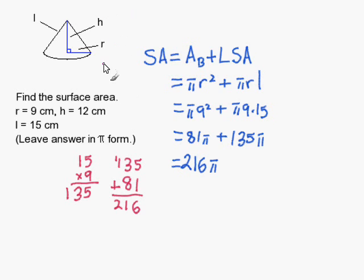I'm going to leave it in pi form because this question is telling me to do so. Now my units are in centimeters squared. Remember this is surface area, so since it's surface area, the units need to be squared.